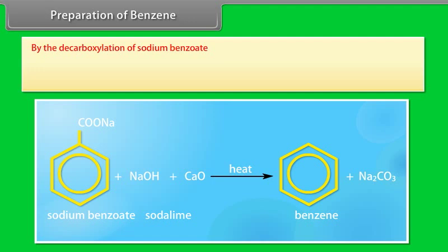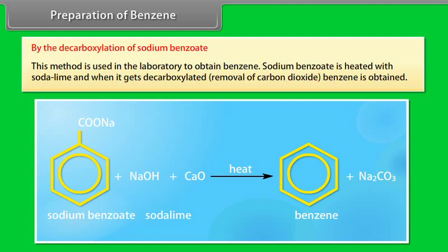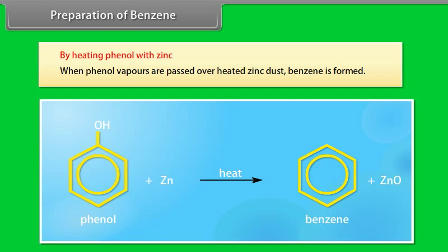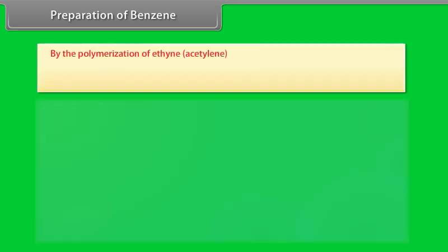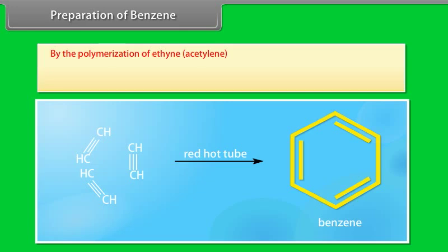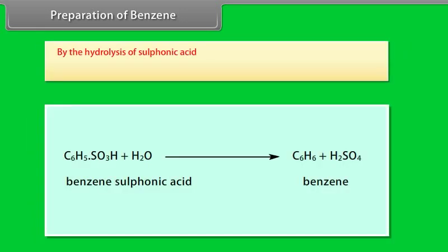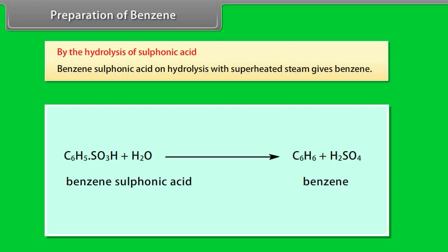Preparation of benzene. By the decarboxylation of sodium benzoate: this method is used in the laboratory — sodium benzoate is heated with soda lime and when it gets decarboxylated (removal of CO2), benzene is obtained. By heating phenol with zinc: when phenol vapors are passed over heated zinc dust, benzene is formed. By polymerization of acetylene: when acetylene is passed through a red-hot copper tube, it polymerizes to benzene. By hydrolysis of sulfonic acid: benzene sulfonic acid on hydrolysis with superheated steam gives benzene.